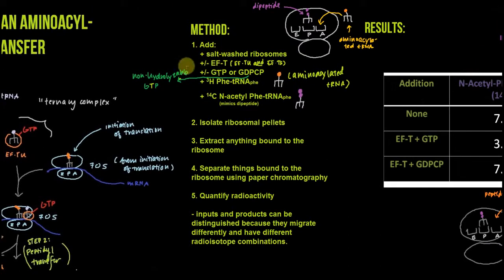To answer these questions, we do the experiment. First, we add a bunch of stuff together: salt-washed ribosomes (remember they're salt-washed because we want to remove any factors associated with them so we can add back just the ones we're interested in). We will add or not add EF-T (remember EF-T includes EF-Tu and EF-Ts). We will add or not add GTP or GDPCP, the non-hydrolyzable GTP.